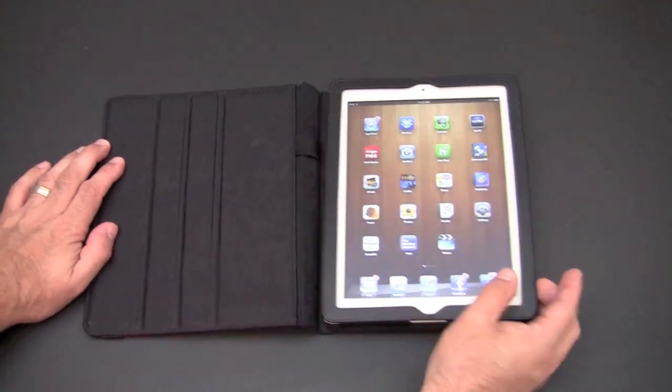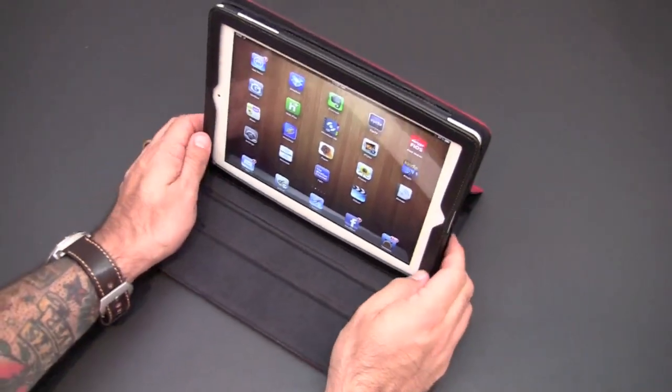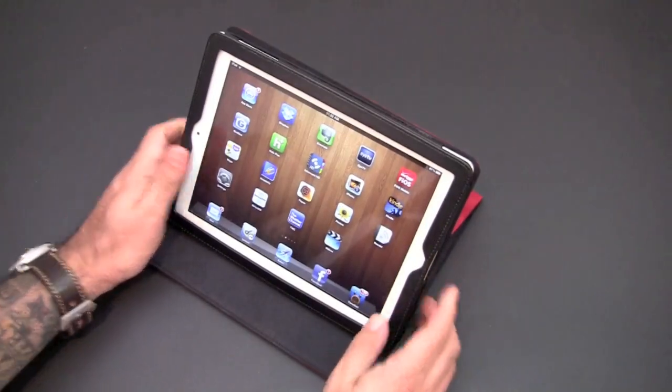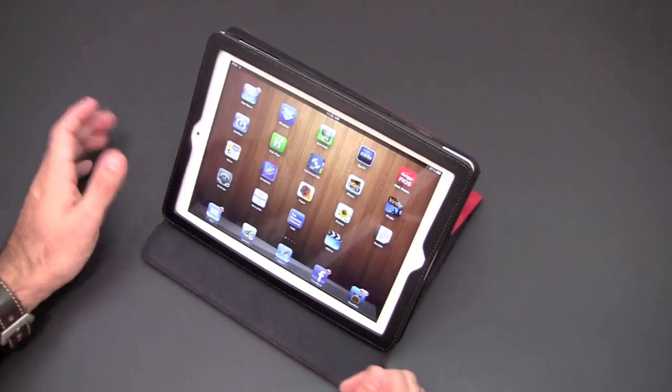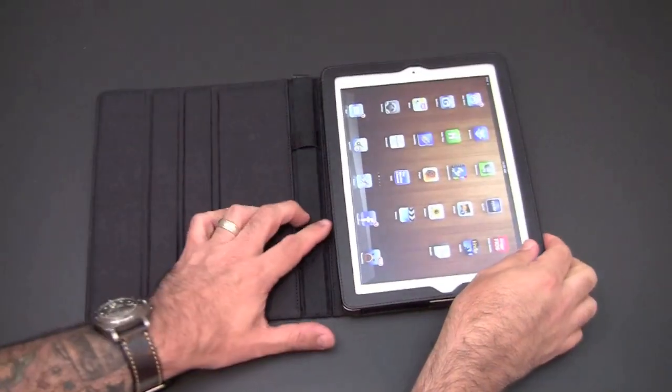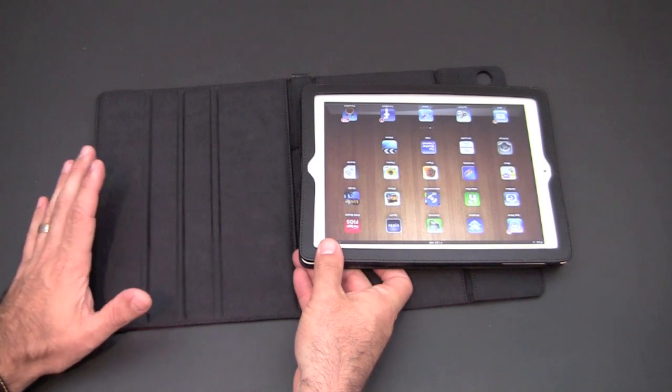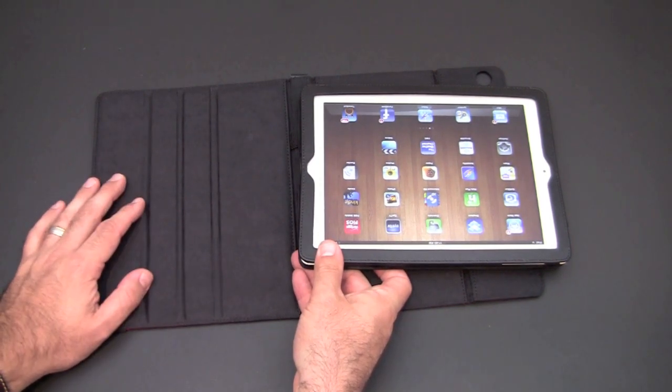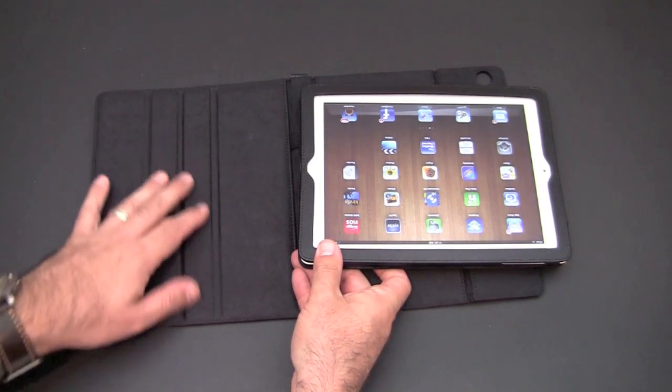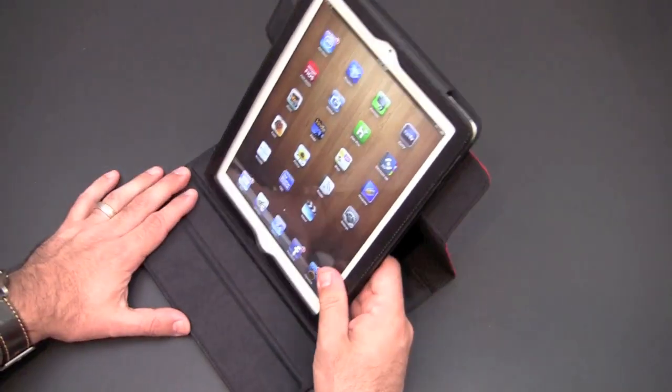This does have three notches for three different stand orientations, kind of a very steep angle, a less steep, and then an even less steep one. So three different angles, but what makes this case really cool is it swivels into 360 degrees of positions, just like the name of the case implies. So not only can you prop it up in three different horizontal or landscape modes, but you can also go into portrait mode as well if you so desire.